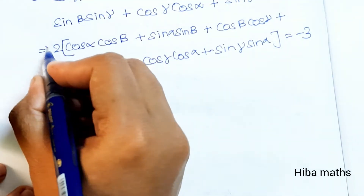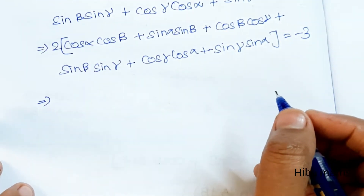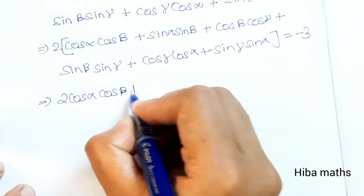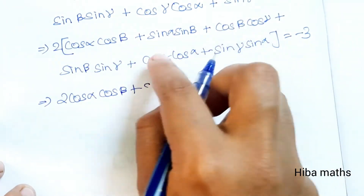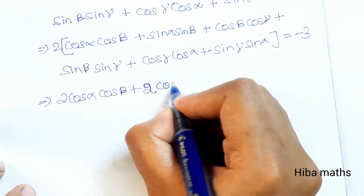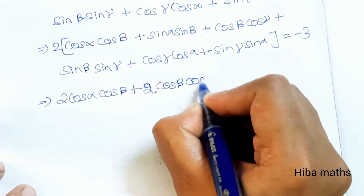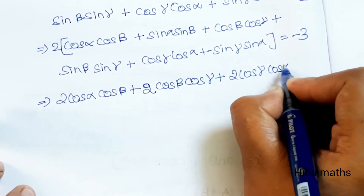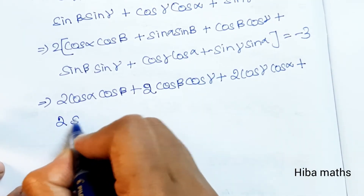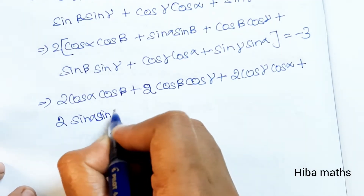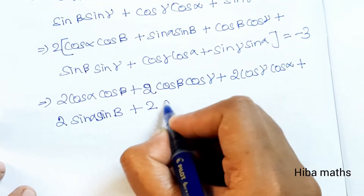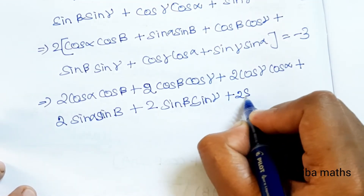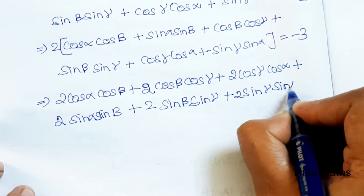This gives: 2 cos α cos β + 2 sin α sin β + 2 cos β cos γ + 2 cos γ cos α + 2 sin β sin γ + 2 sin γ sin α equals -3.